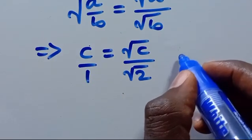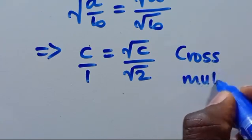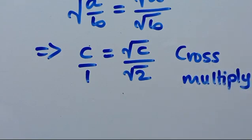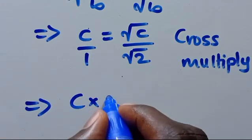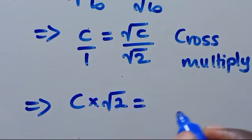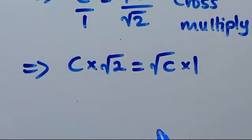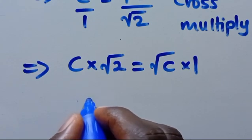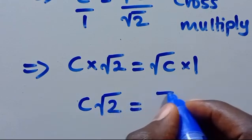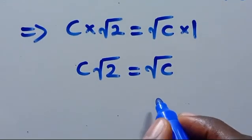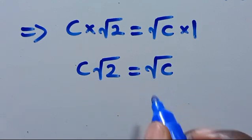Then let this be divided by 1, and when we cross multiply, this gives us C times root 2 equals root C times 1. So from here we have C multiplied by root 2 equals root C.